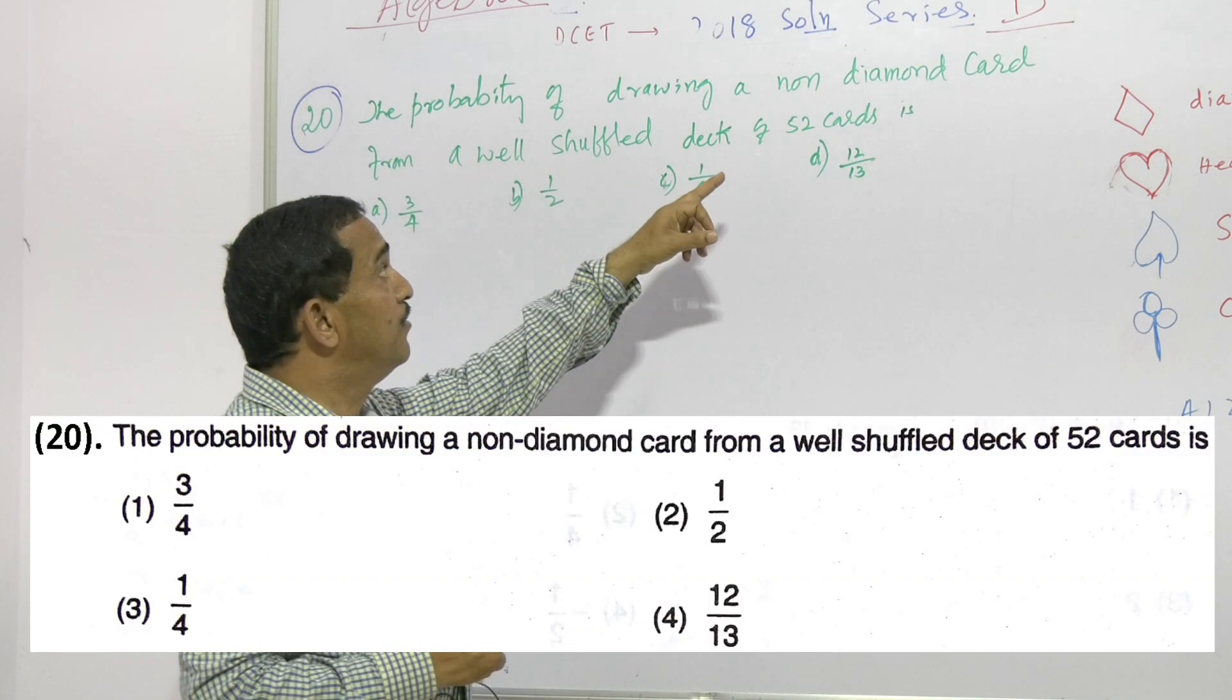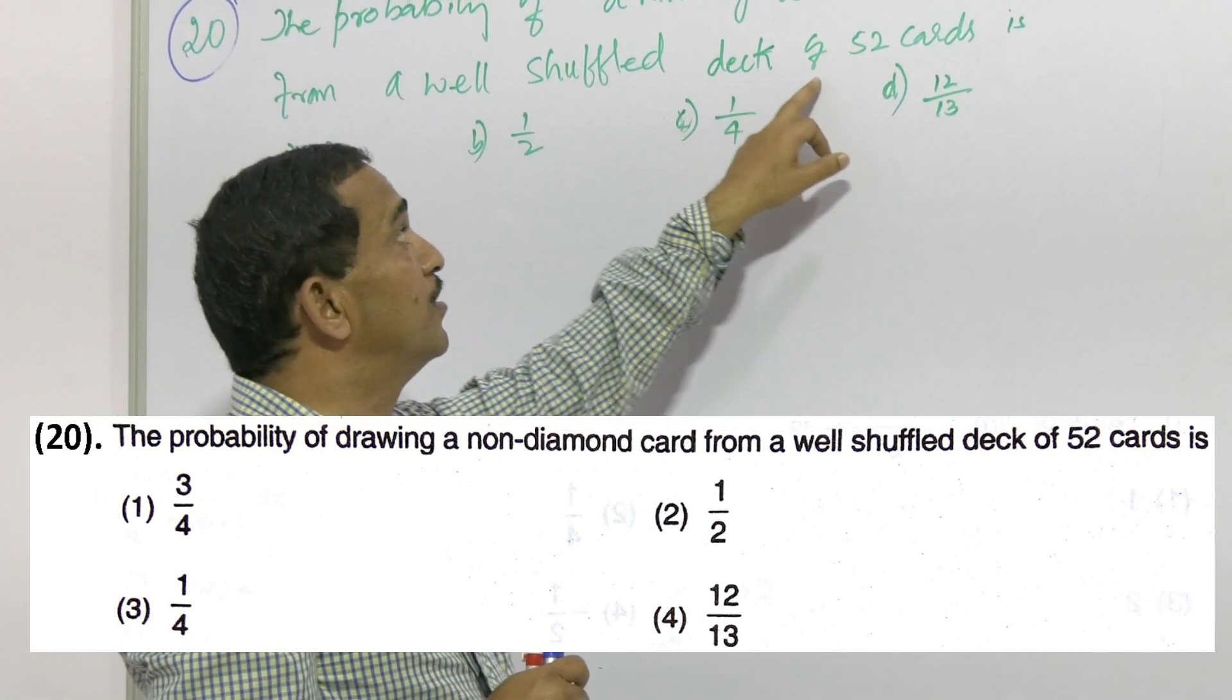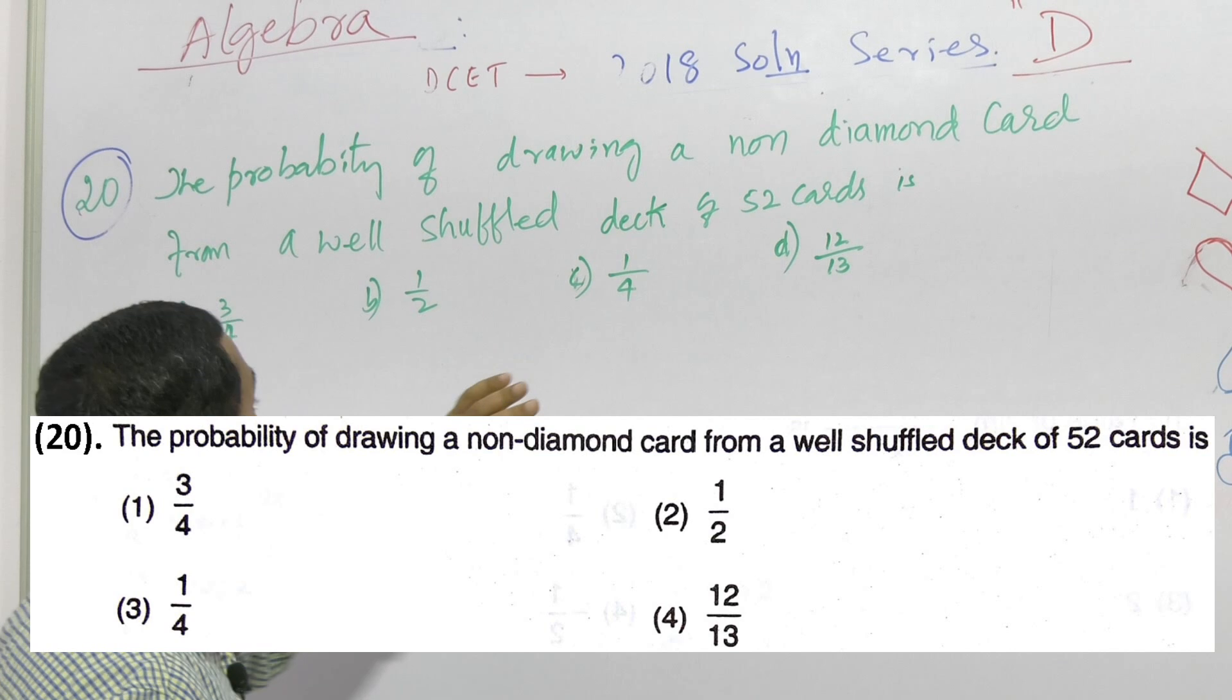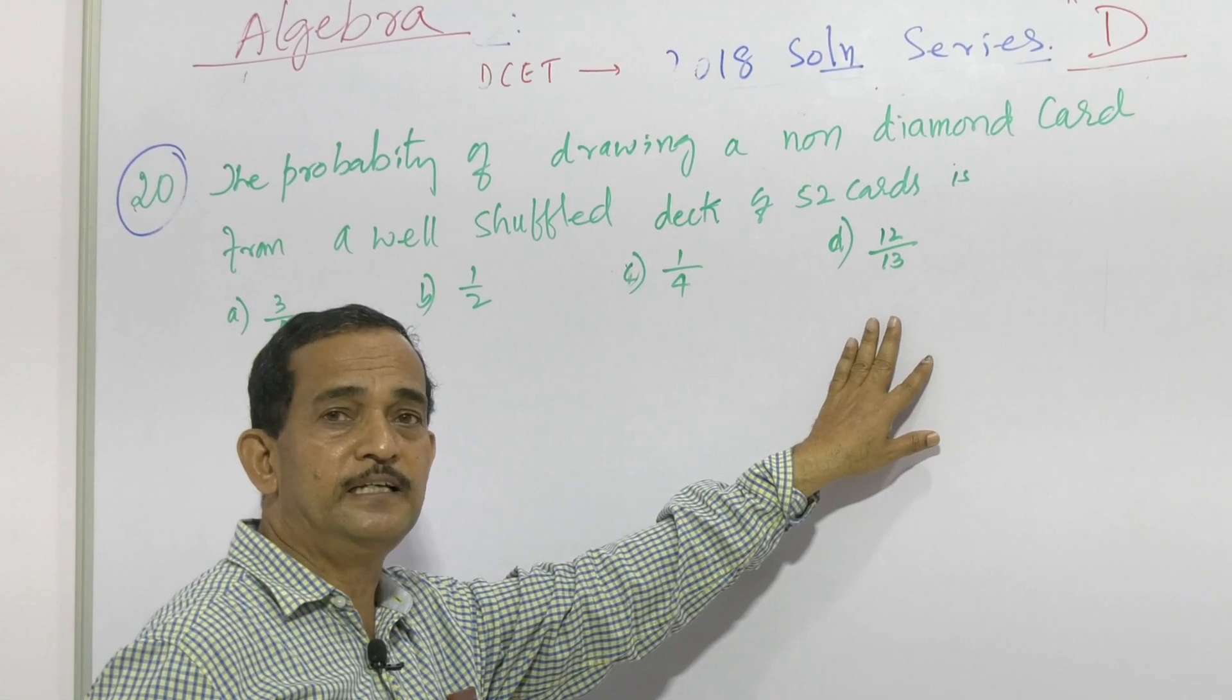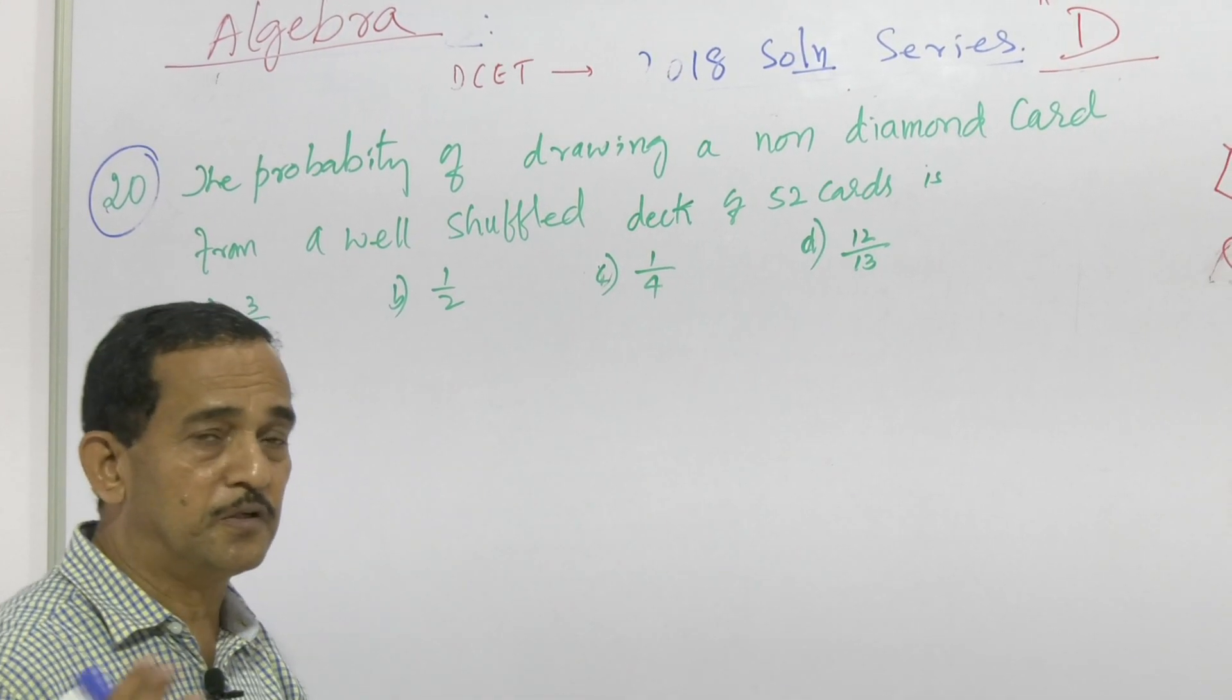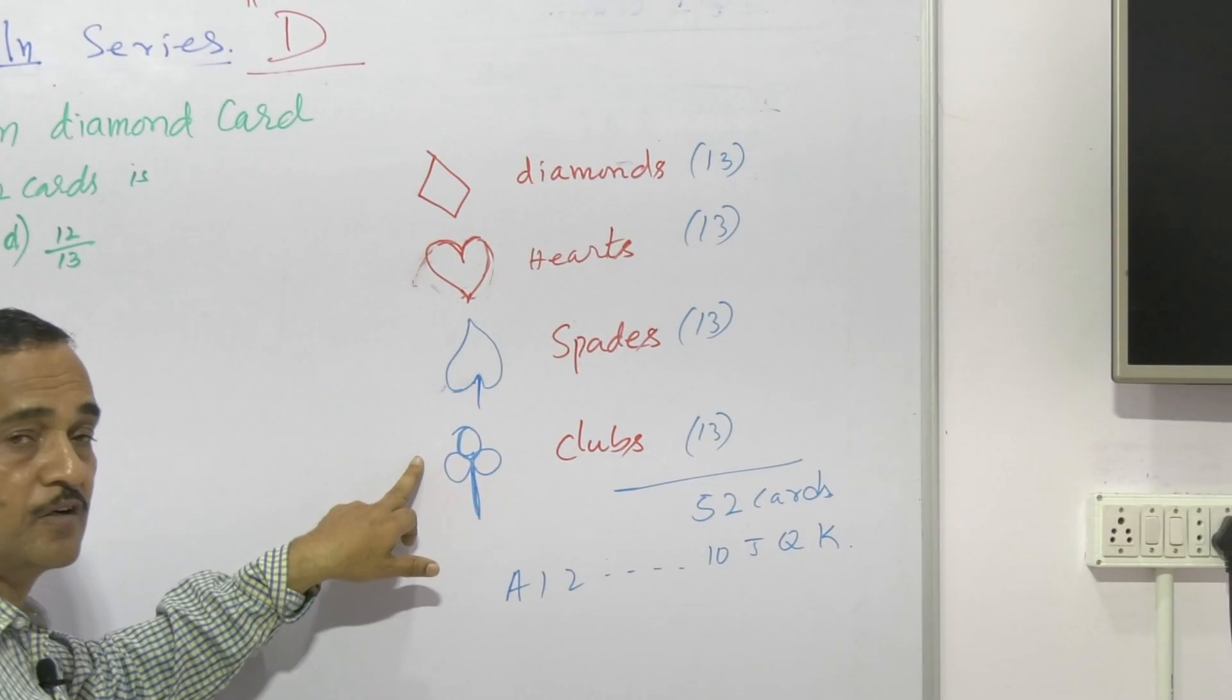Now see here, the probability of drawing a non-diamond card from a well-shuffled deck of 52 cards is what we have to find, either 3 by 4 or 1 by 2 or 1 by 4 or 12 by 13. This is the concept. So most students are not knowing about the cards.